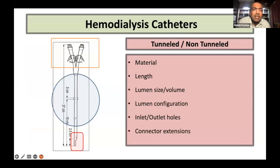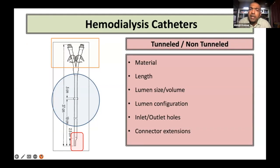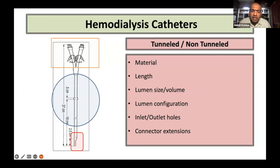Hemodialysis catheters are of the tunneled or the non-tunneled variety. A catheter can be broadly divided into three parts: one is the connectors and the hub part, the second is the body of the catheter, and finally there is the catheter tip which lies inside the vessel. Depending on the material, length, lumen size, lumen configuration, inlet and outlet holes, and connector extensions, various types of catheters are available in the market.